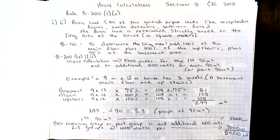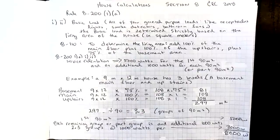So the first part is how to figure out your basic load. And what the basic load is in a home, all of your general purpose loads like receptacles, lights, smoke detectors, bathroom fans, etc. are considered basic loads. And what we do is a calculation based strictly on the living area of the house. And we have to find that in square meters to match the code.